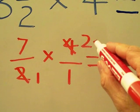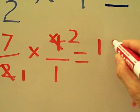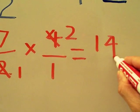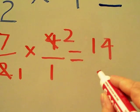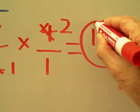Now, all we do is multiply across. 7 times 2 is 14. 1 times 1 is 1. We do not need to write the 1. So, our final answer is 14.